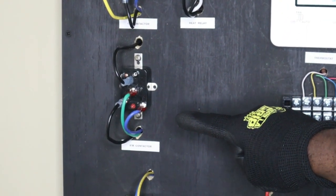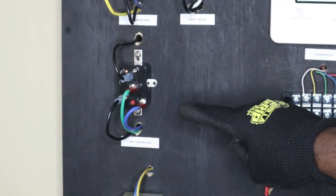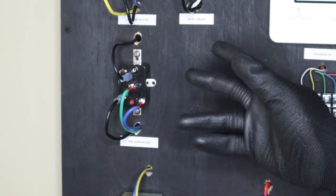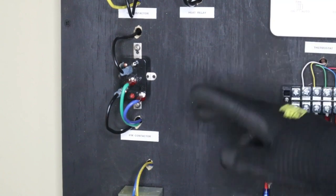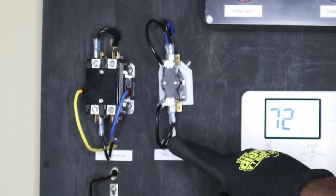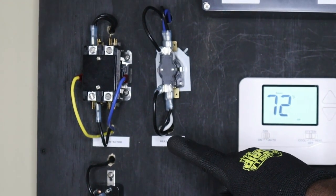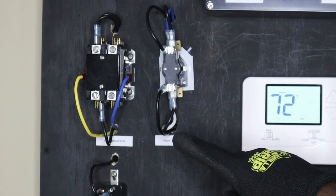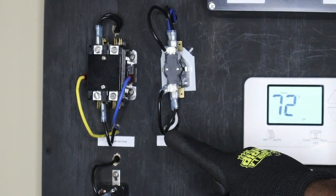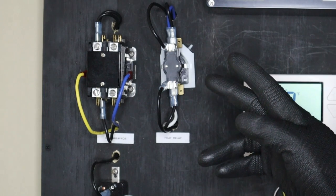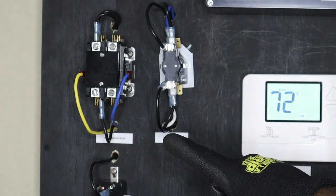Just above that I have my fan relay. This supplies high voltage to my indoor blower. Just above that is my cooling contactor. This contactor supplies high voltage to my condenser fan motor as well as my compressor.